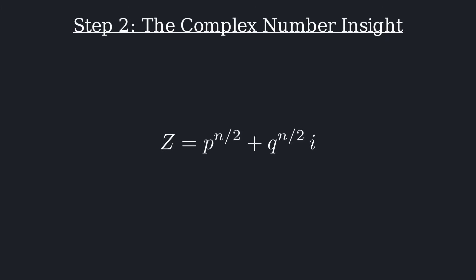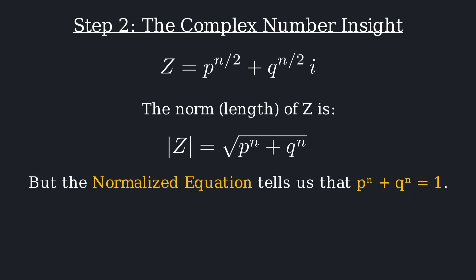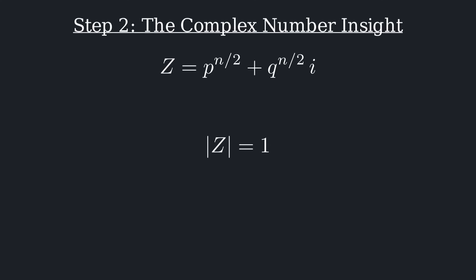Why? Because the norm or length of z is the square root of p to the n plus q to the n. But from our normalized equation, we know that p to the n plus q to the n is just 1, which means the norm of our complex number z must be exactly 1.